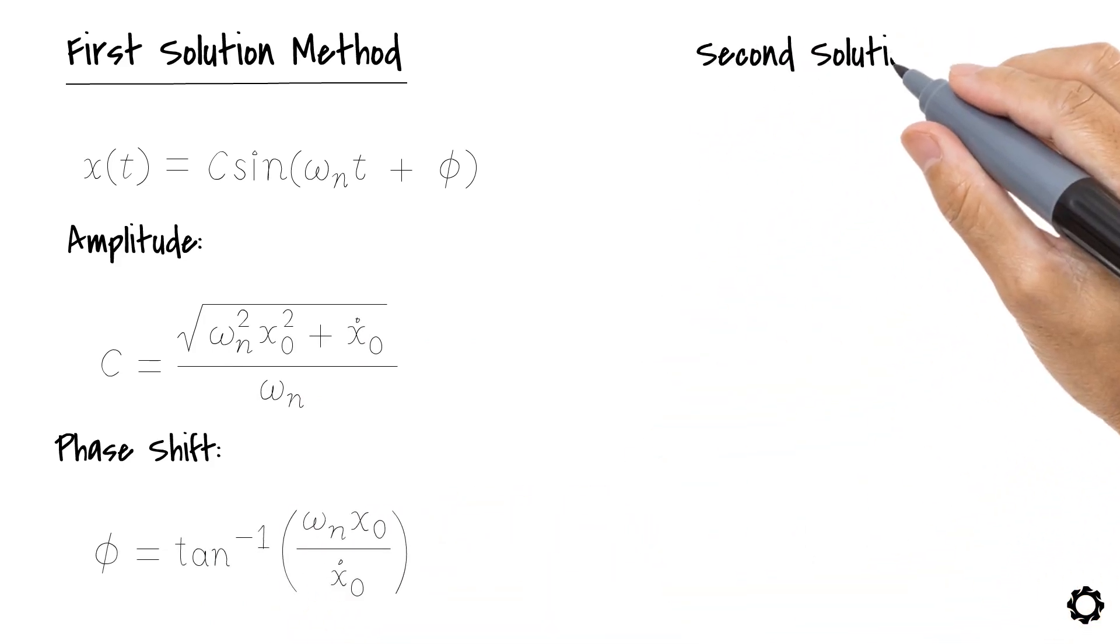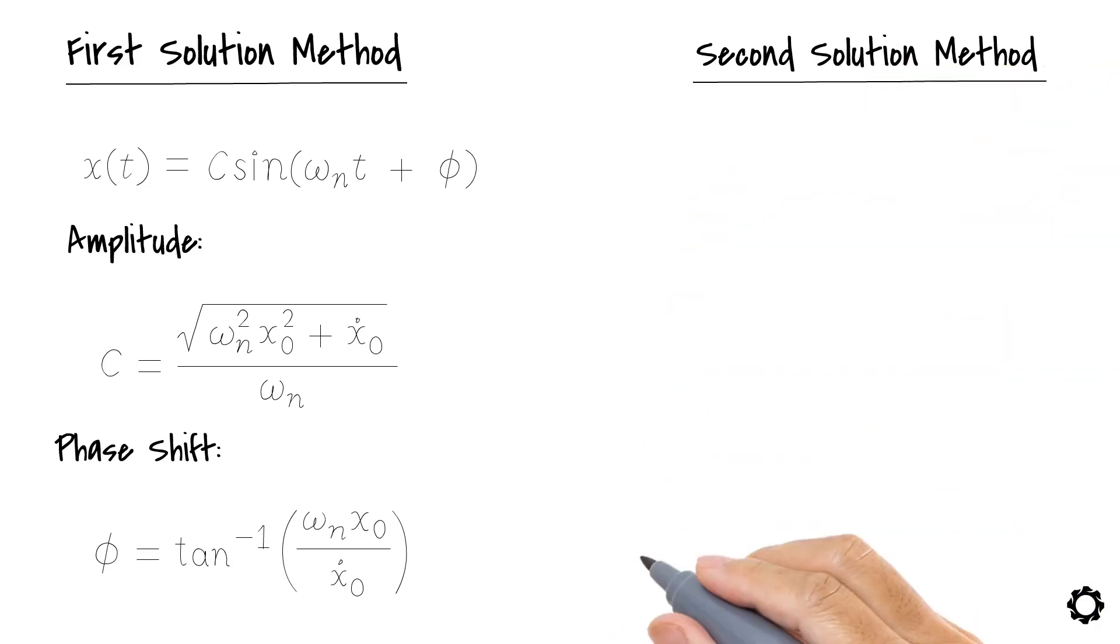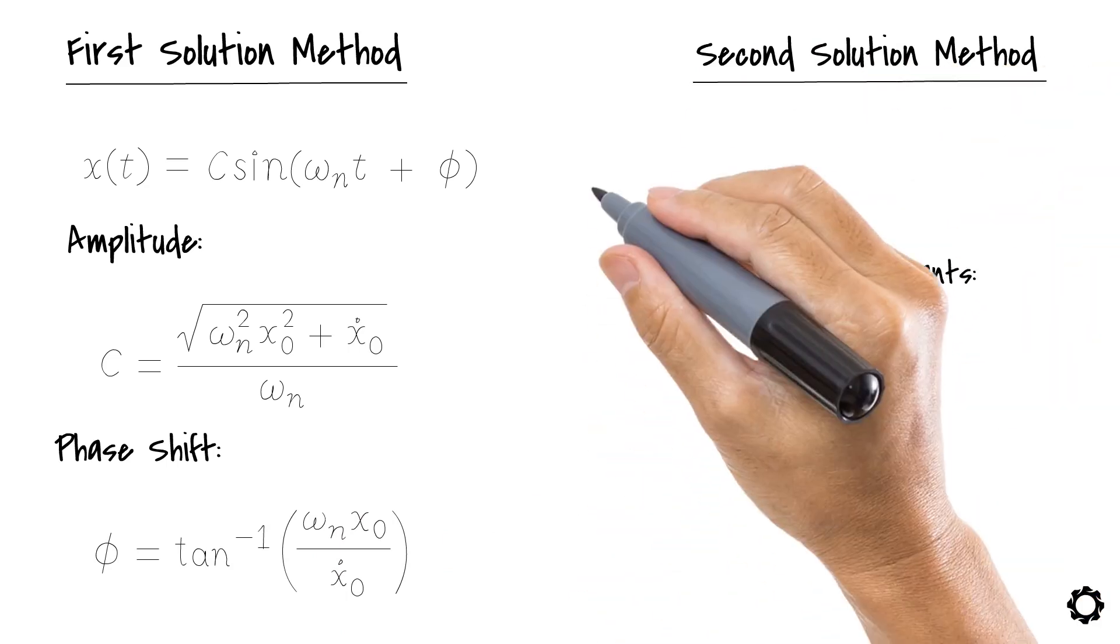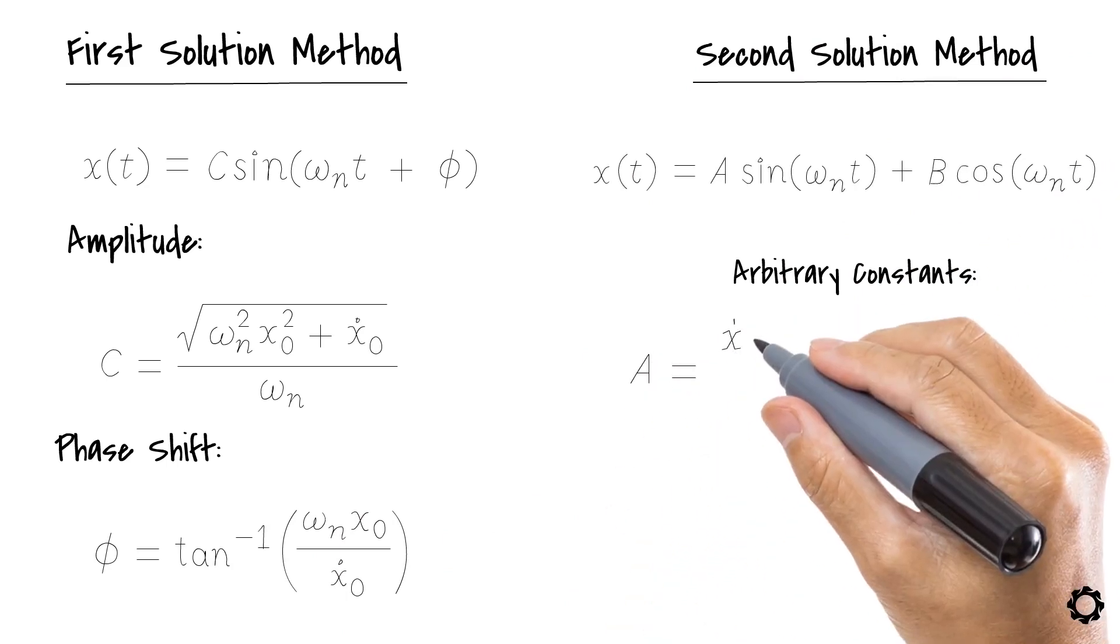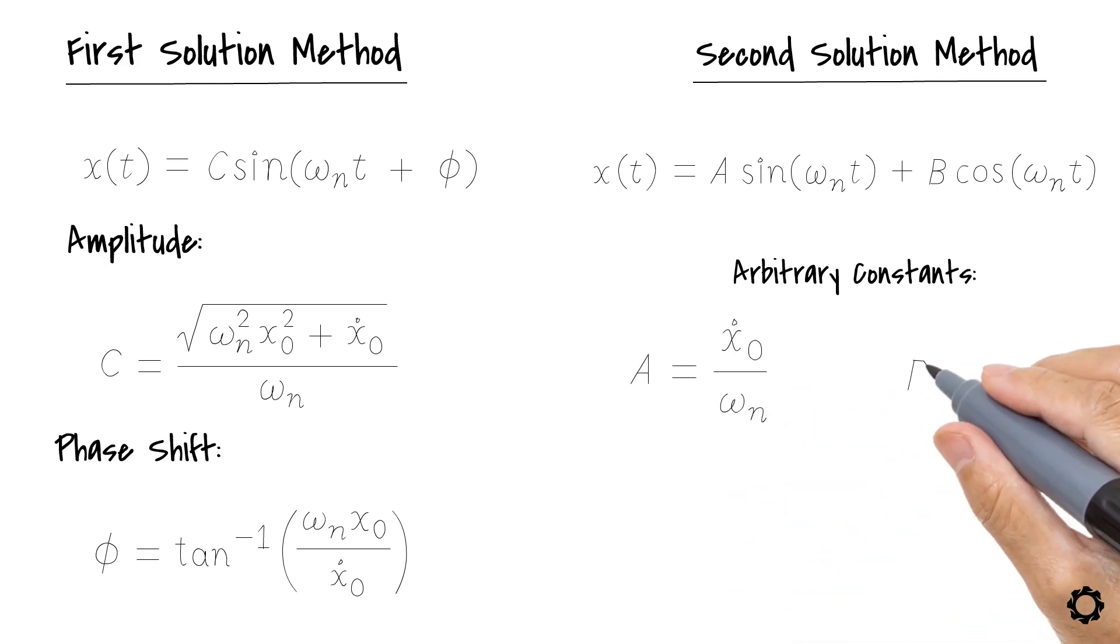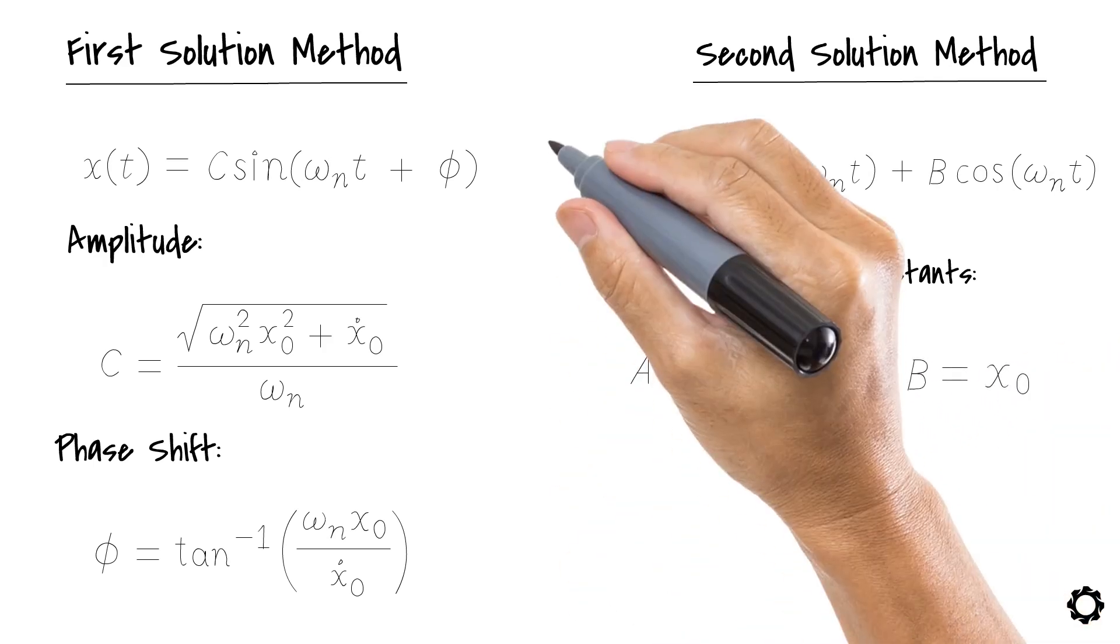In the second solution method, we write the solution of the equation of motion by using arbitrary constant variables a and b. We can determine these variables by using the following equations. a equals x dot zero divided by omega n. b equals x zero.